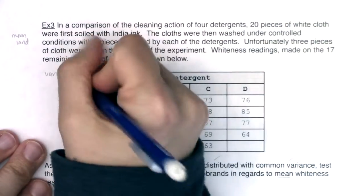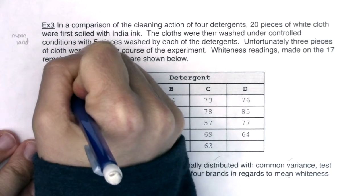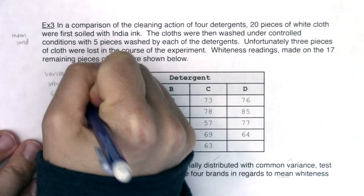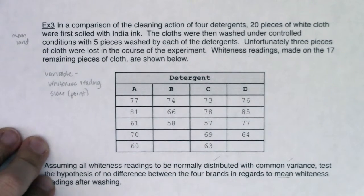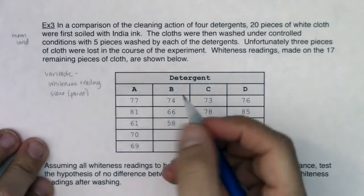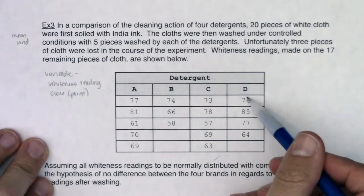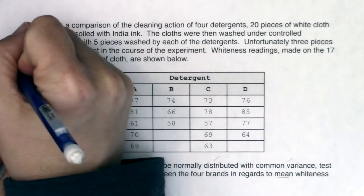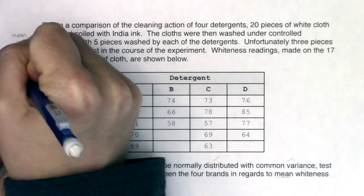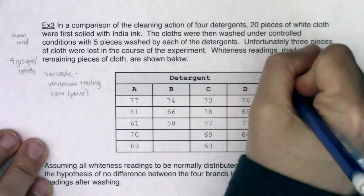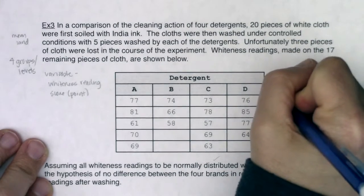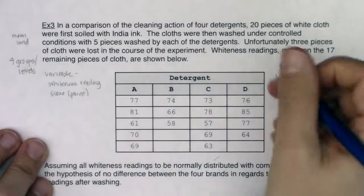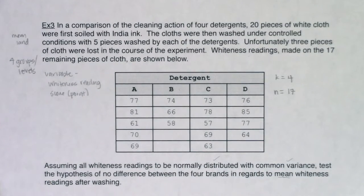The variable here is the whiteness reading after washing a cloth with a certain detergent — it's some kind of score on a point system. Looking at the groups, my factor is detergent and I have four levels of that factor. So K equals four. And N is not 20 — they started with 20 but lost some — so N equals 17.